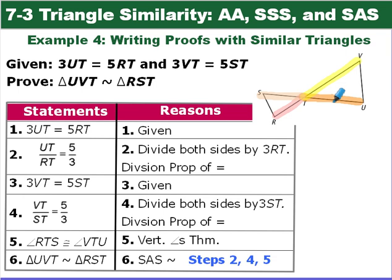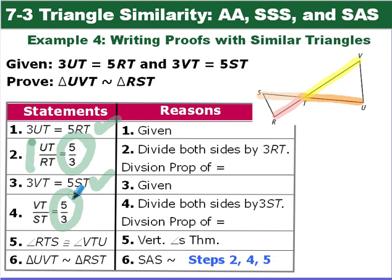Starting with the given statement that 3·UT equals 5·RT, we can write the corresponding sides as UT over RT with a ratio of 5 over 3. Doing the same with 3·VT equals 5·ST gives VT over ST also equal to 5 over 3. So the corresponding sides are proportional. We also have vertical angles, which are congruent. With two pairs of proportional sides and a congruent included angle, we apply side-angle-side similarity.